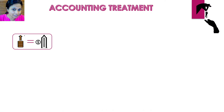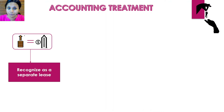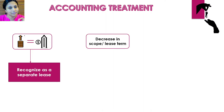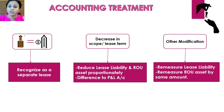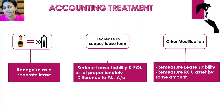If there is an increase in scope, then you need to check whether the increase in consideration is commensurate with the standalone price of the right of use of that asset. If it is, then you cannot club this lease with your existing lease — you need to record it as a separate lease. If it is a decrease in scope or lease term, then you need to reduce the lease liability as well as the ROU asset proportionately, and any difference is to be taken to the P&L account. For any other kind of lease modification, you need to remeasure the lease liability using the revised discount rate and adjust this increase or decrease in lease liability in the ROU assets account.